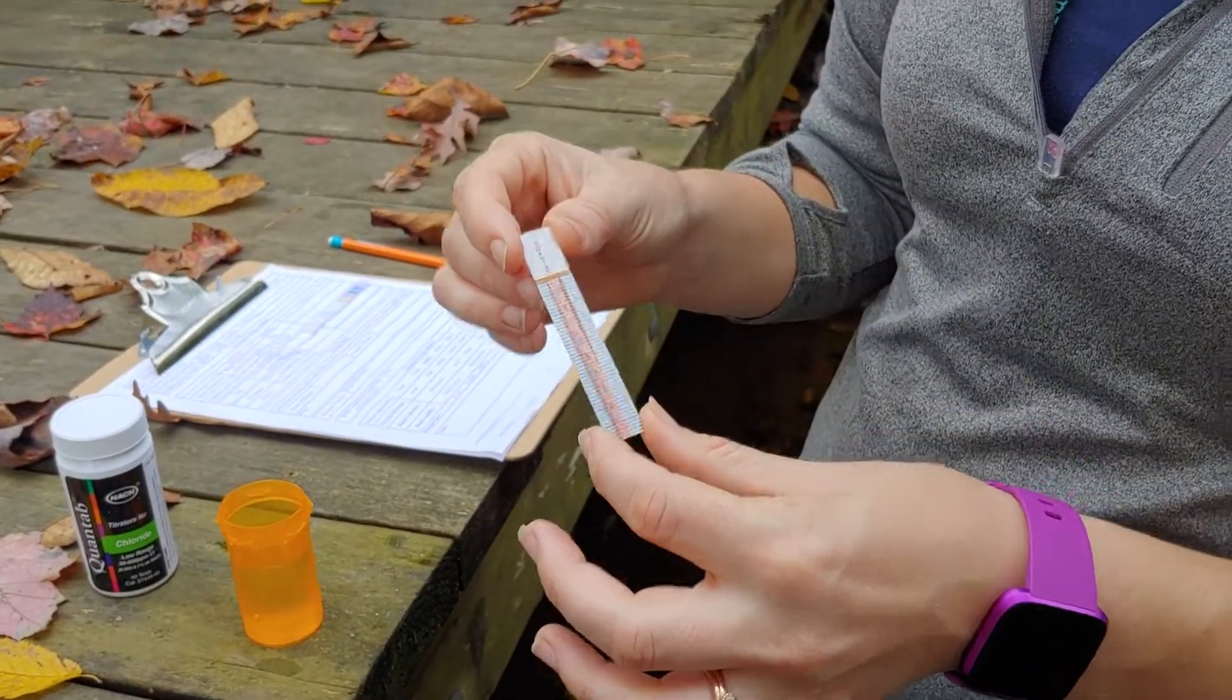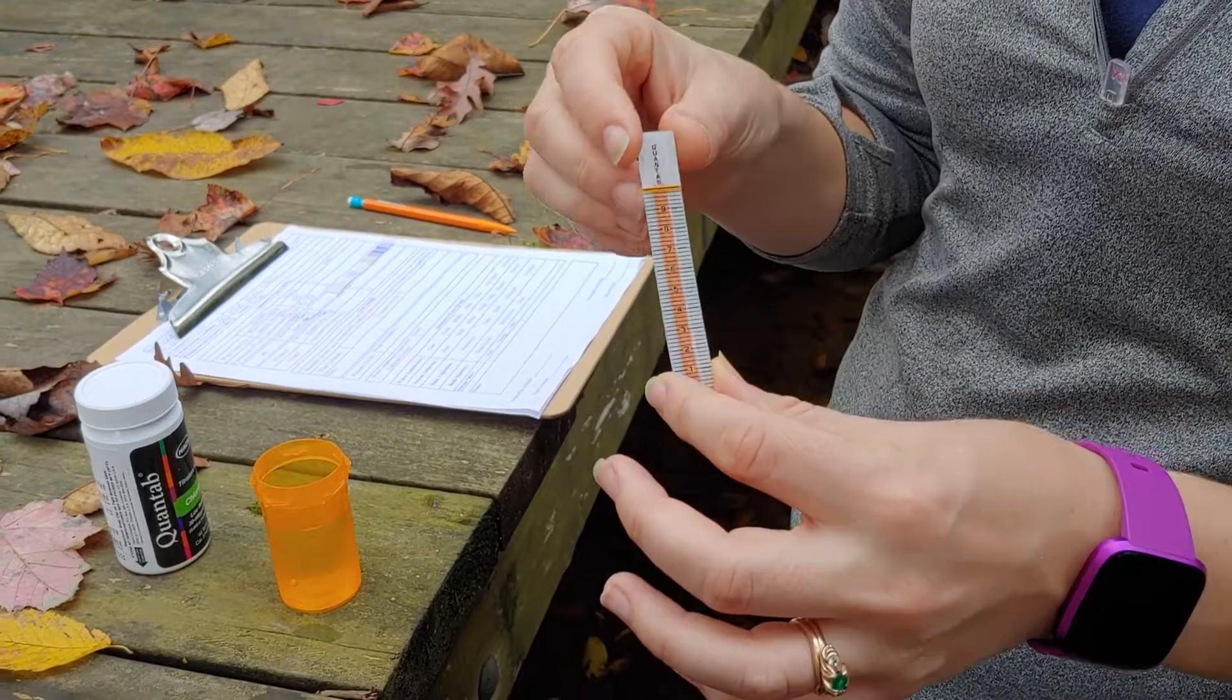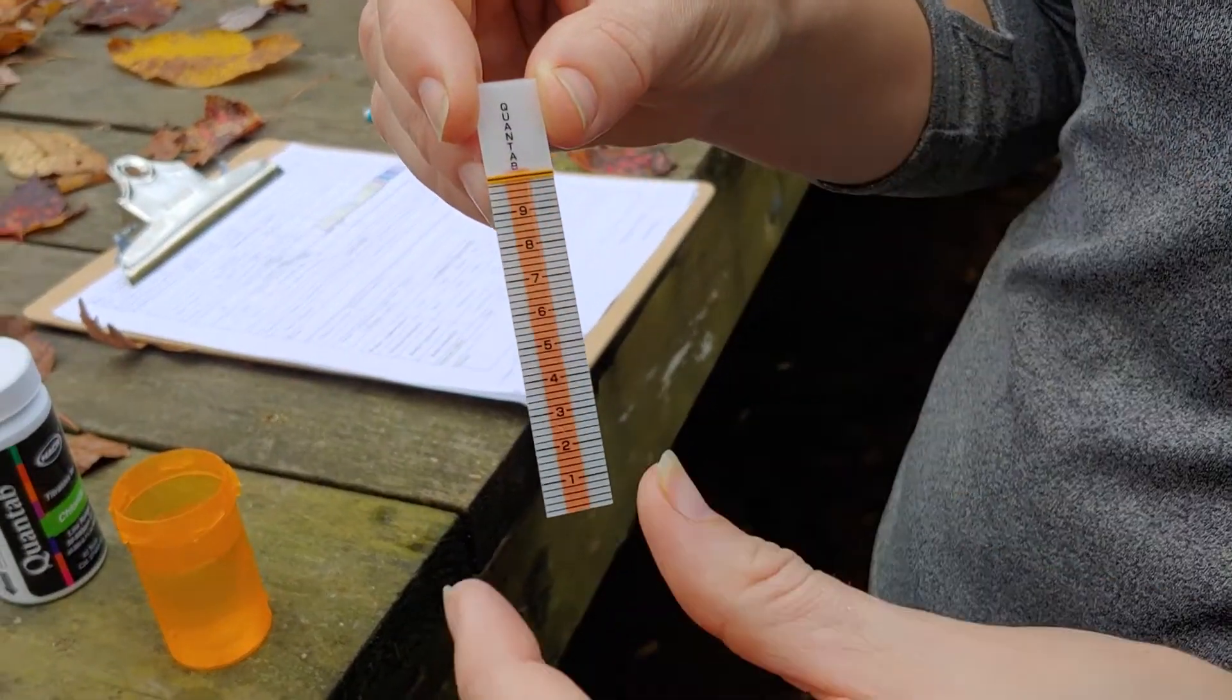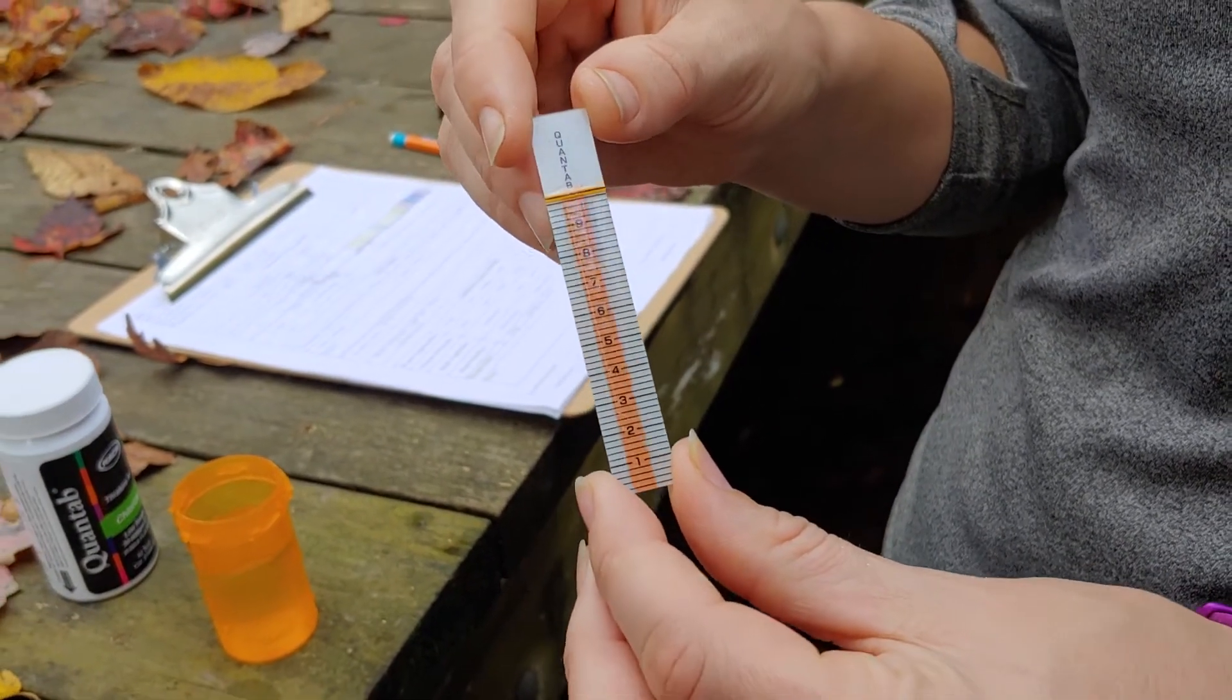Next we're going to do our chloride strips, and these are a little different than the pH strips. There is an indicator line at the top that changes from orange to black when it is done taking its reading.